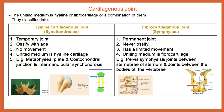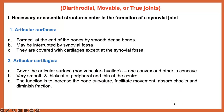The third type is the diarthrodial joint, or movable joint, or true joint — which is the synovial joint. There are two important structural categories: first, the essential or necessary structures, which must be present in every true joint; and second, the accessory structures, which may be present in some joints and absent in others.